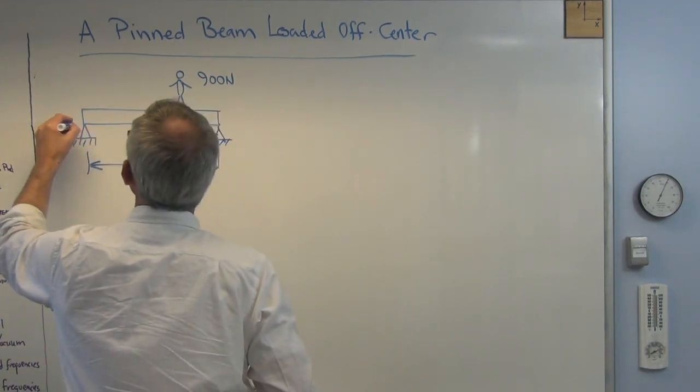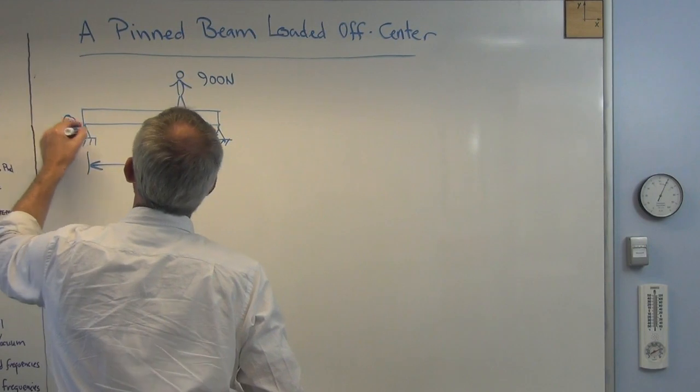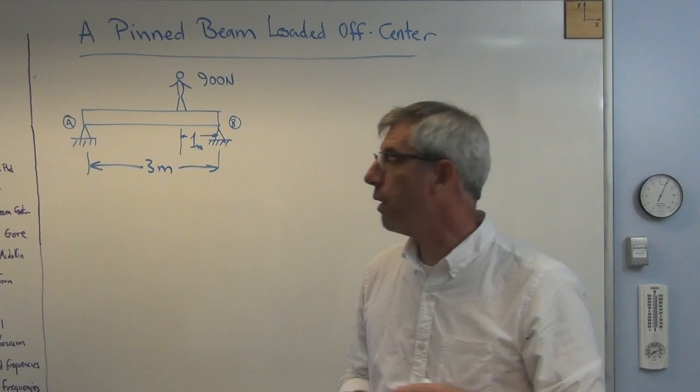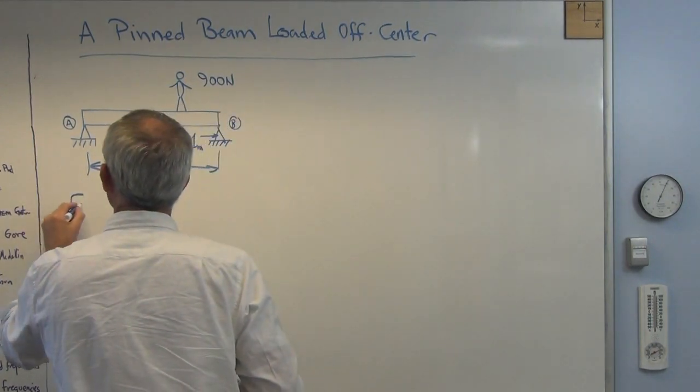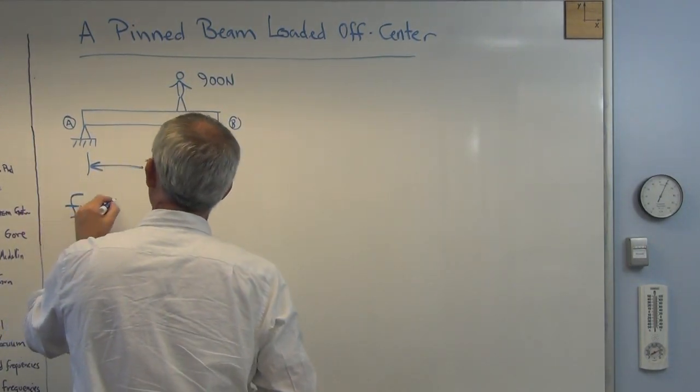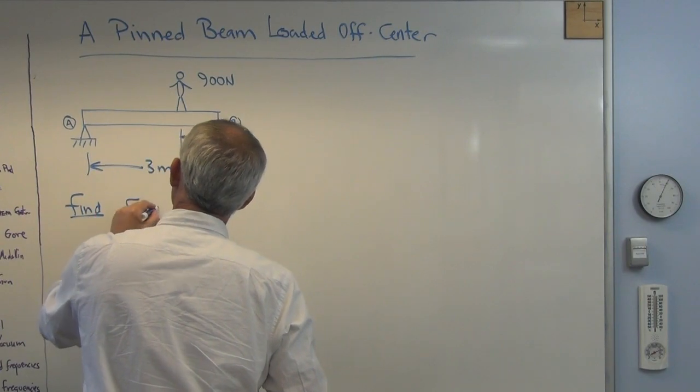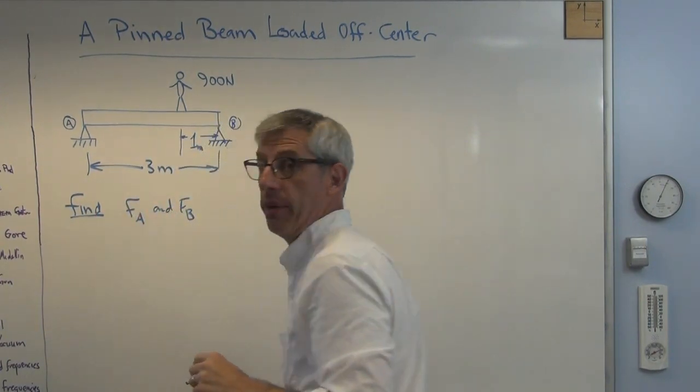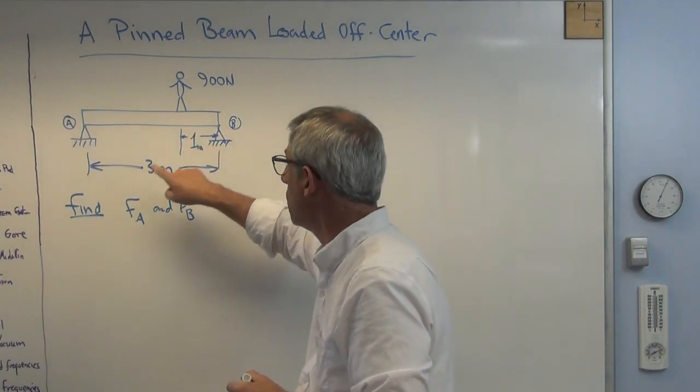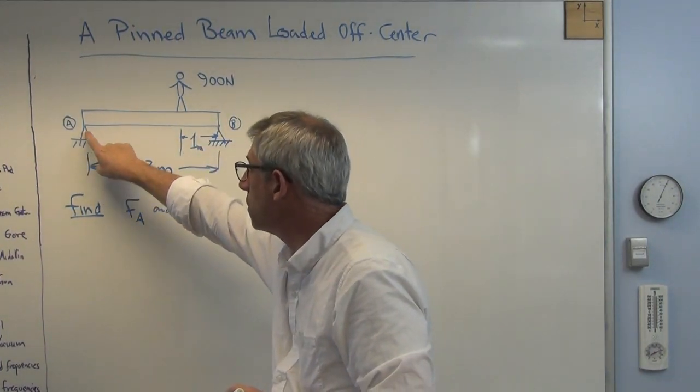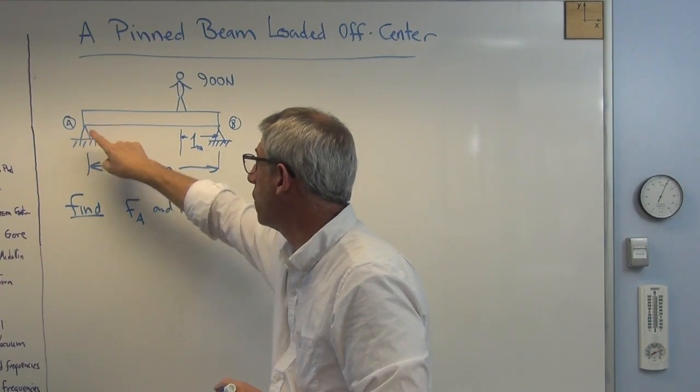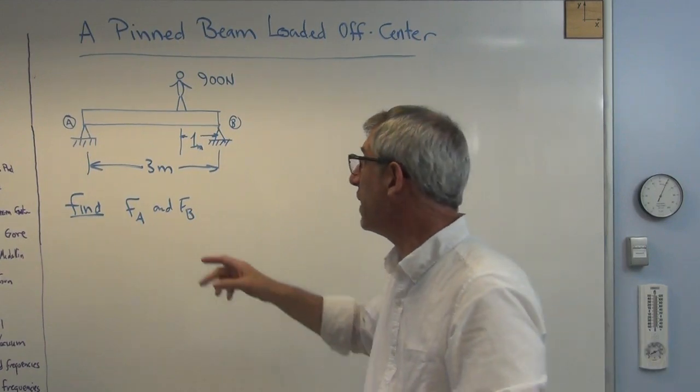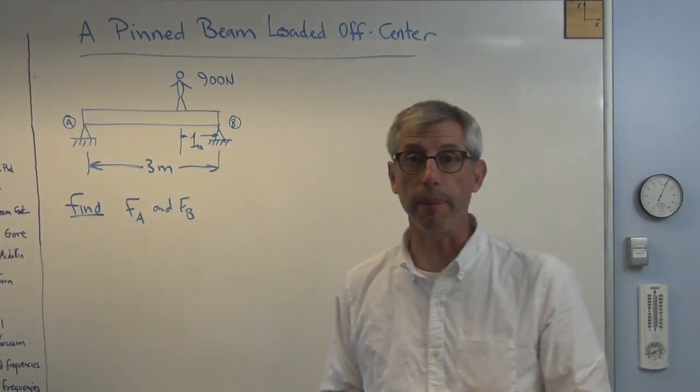And I've got to call these ends something, so I'll call that A, and I'll call this B. So given that, the solution is find the reaction force at A and the reaction force at B. So obviously, when you're standing on the beam, there's a part of the weight is being supported over here, and part is being over here. Since the load is not in the center, it makes sense that those two wouldn't be the same.